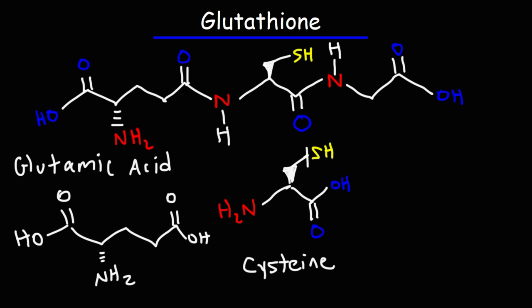Now the thiol group of cysteine which is in glutathione, that group is very critical for glutathione's function as an antioxidant which we'll talk about later.